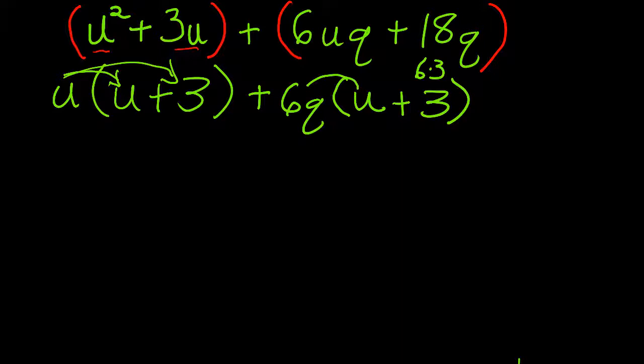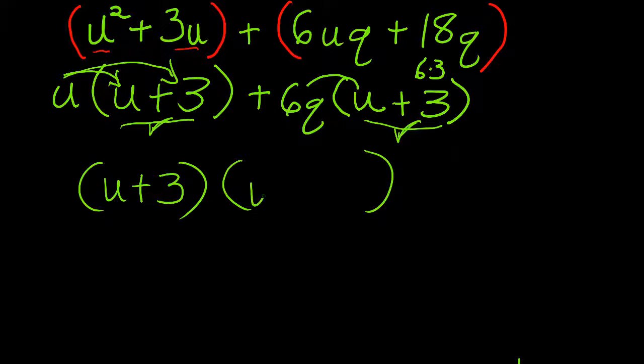Now notice that the u plus 3 in both terms is exactly alike. So this now becomes your GCF. Pull that out to the front: u plus 3. Because you've got a u plus 3 in this term, and a u plus 3 in this term, you pull that out. And what you're left with is u plus 6q.